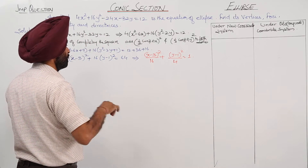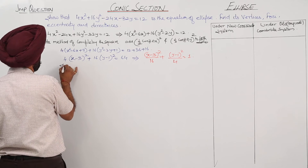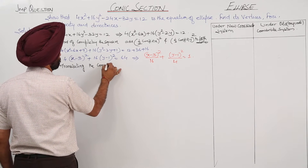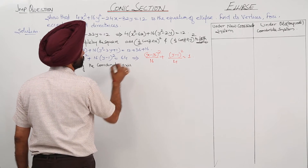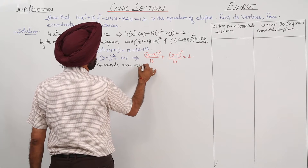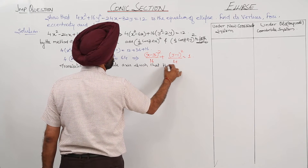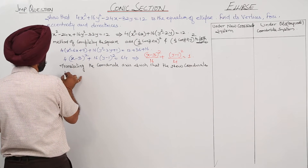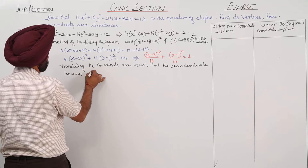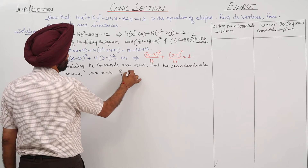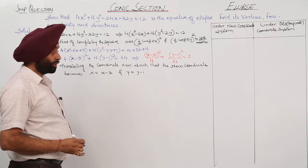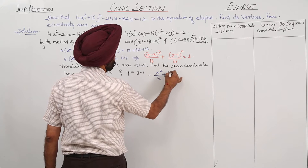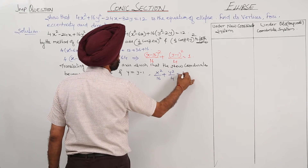Now, translating the coordinate axes such that the new coordinates become X = x − 3 and Y = y − 1. With this substitution, we get X²/16 + Y²/4 = 1.